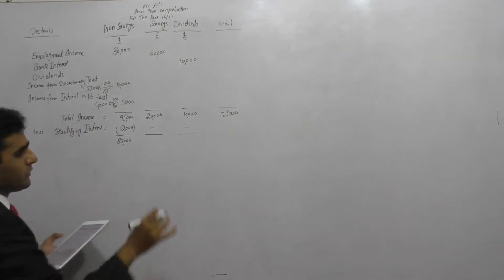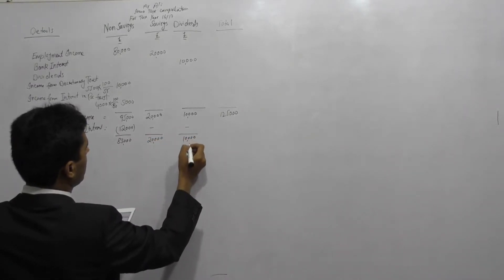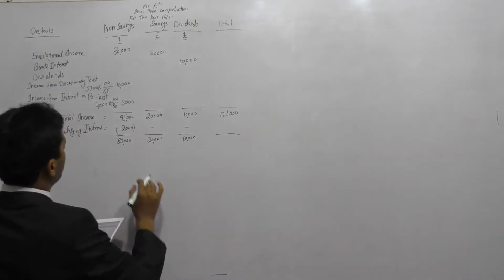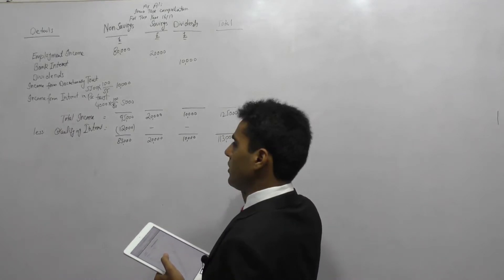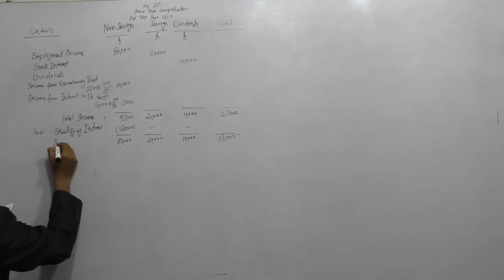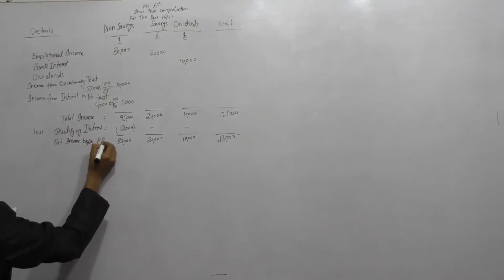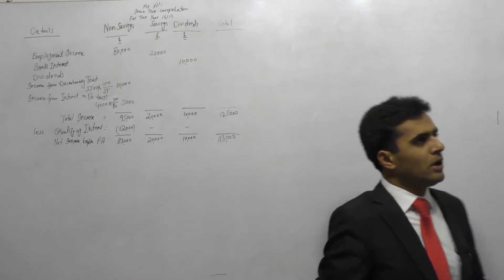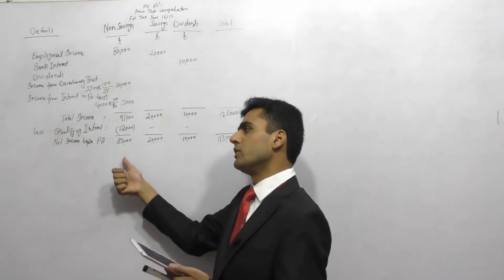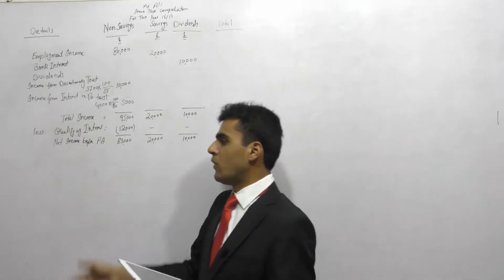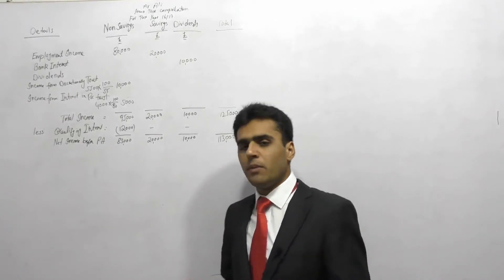Please make sure you check the calculations — I might make mistakes. The total comes to £113,000, and that figure is net income before personal allowance. Now, do you remember anything we need to do with this figure? There is a formula where we use net income before personal allowance — specifically to calculate adjusted net income.